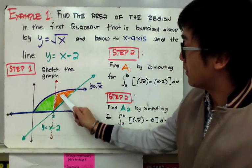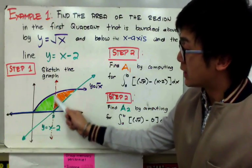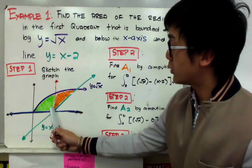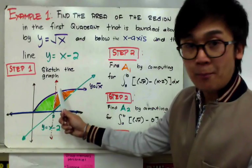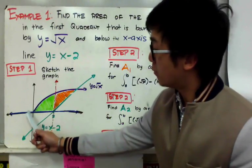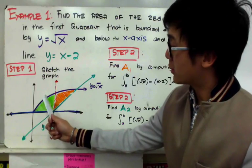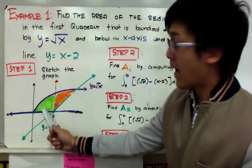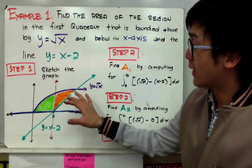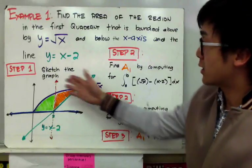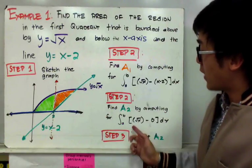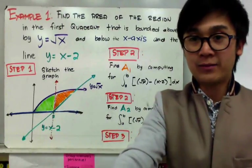The first region is on the left and the second region is on the right. The area of the first region is the definite integral from 2 to the point of intersection of top minus bottom dx. The area of the second region is the integral from 0 to 2 of square root of x minus the x-axis. Adding these two subregion areas gives us the total area.